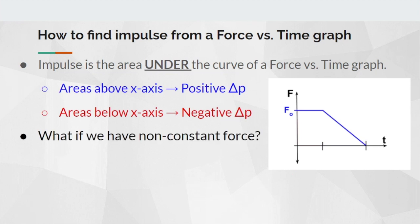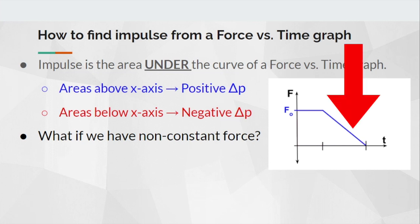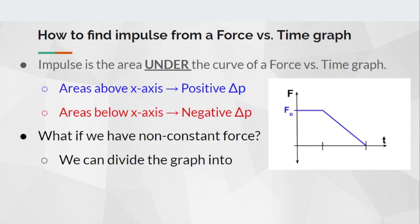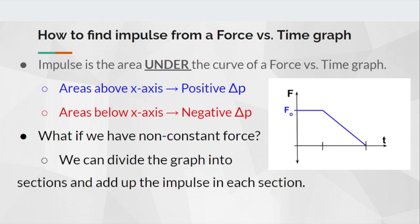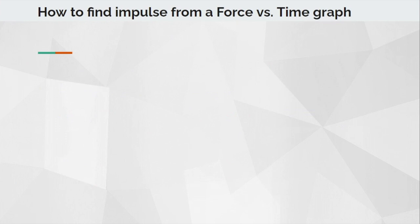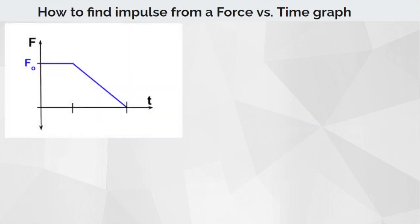What if we have a non-constant force? The first few seconds we have a constant force — a nice straight line — and then the line becomes sloped and heads towards the x-axis, which is classified as a non-constant force. To handle this, we divide the graph into sections and add up the impulse of each section, similar to what we did with work from force versus displacement graphs.